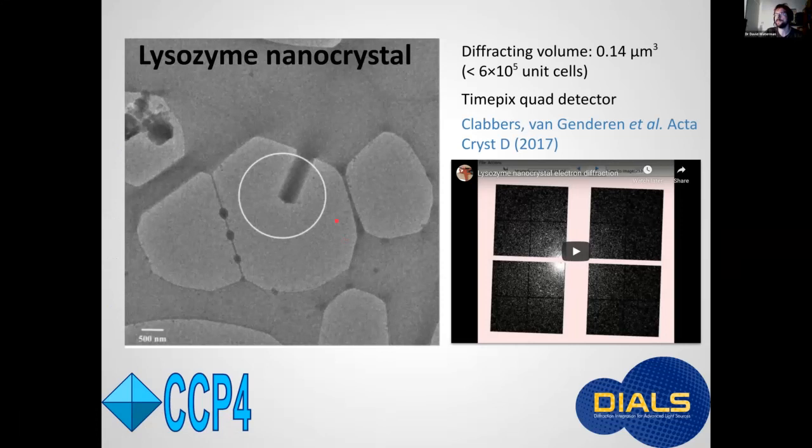Here's an example from when I started with electron diffraction. This comes from Max Clabbers and co-authors at Basel in the PSI, who solved the structure of this unusual orthorhombic form of lysozyme. And they could solve this from a single crystal with less than 600,000 unit cells, which might still stand as a record for the smallest single crystal structure solution.